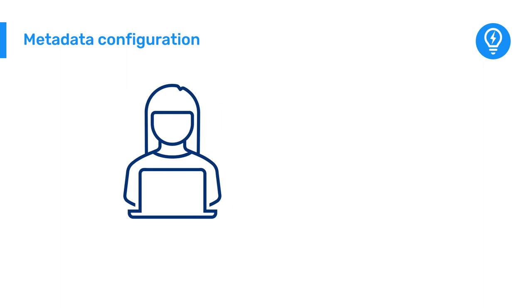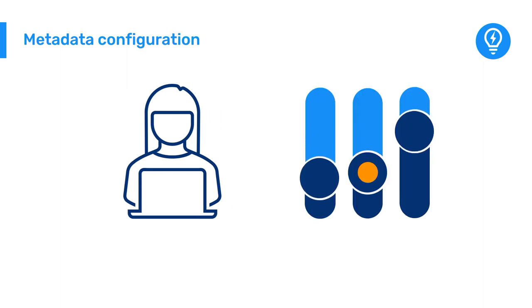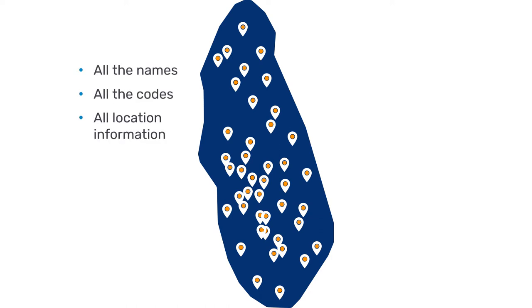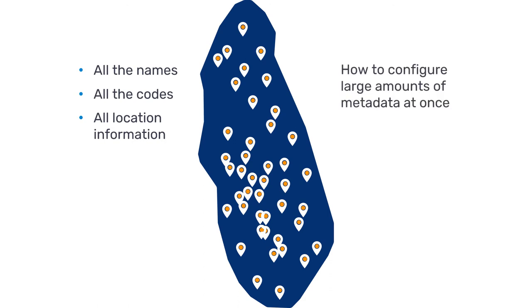However, while it is possible to modify all of the metadata via the DHIS2 user interface, there are some constraints in practice. For example, if I want to add an entire organization unit hierarchy, including all of the names, codes, and location information for all health facilities or schools in a country, it would not be practical to perform this operation one organization unit at a time. You can learn about recommended approaches for configuring large amounts of metadata at once, such as the mass import functionality in DHIS2.